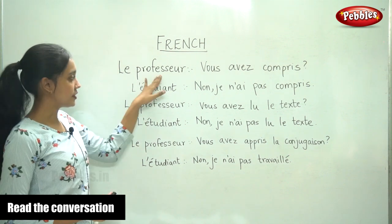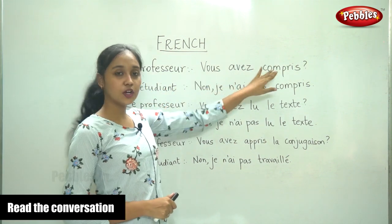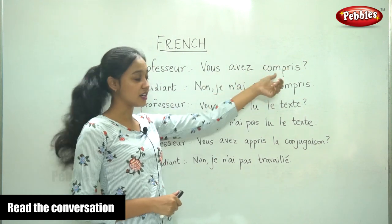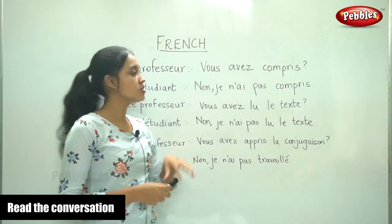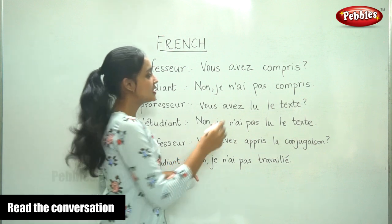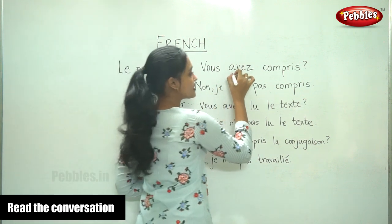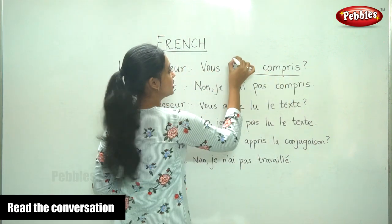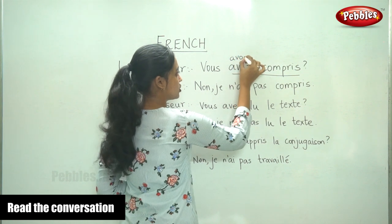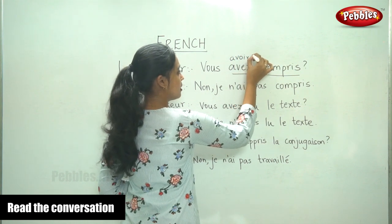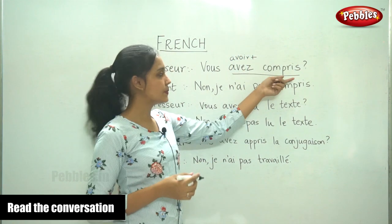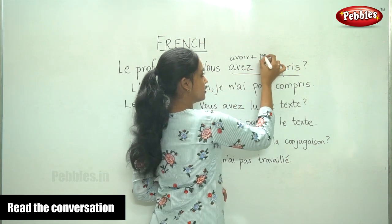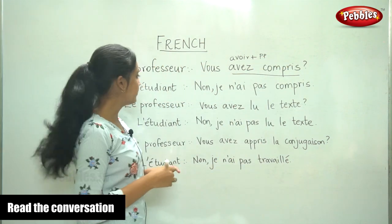The professor asks, 'Vous avez compris?' — 'Have you understood?' The question is in the passé composé. 'Avez' is the avoir conjugation plus the past participle of comprendre. Vous avez compris?